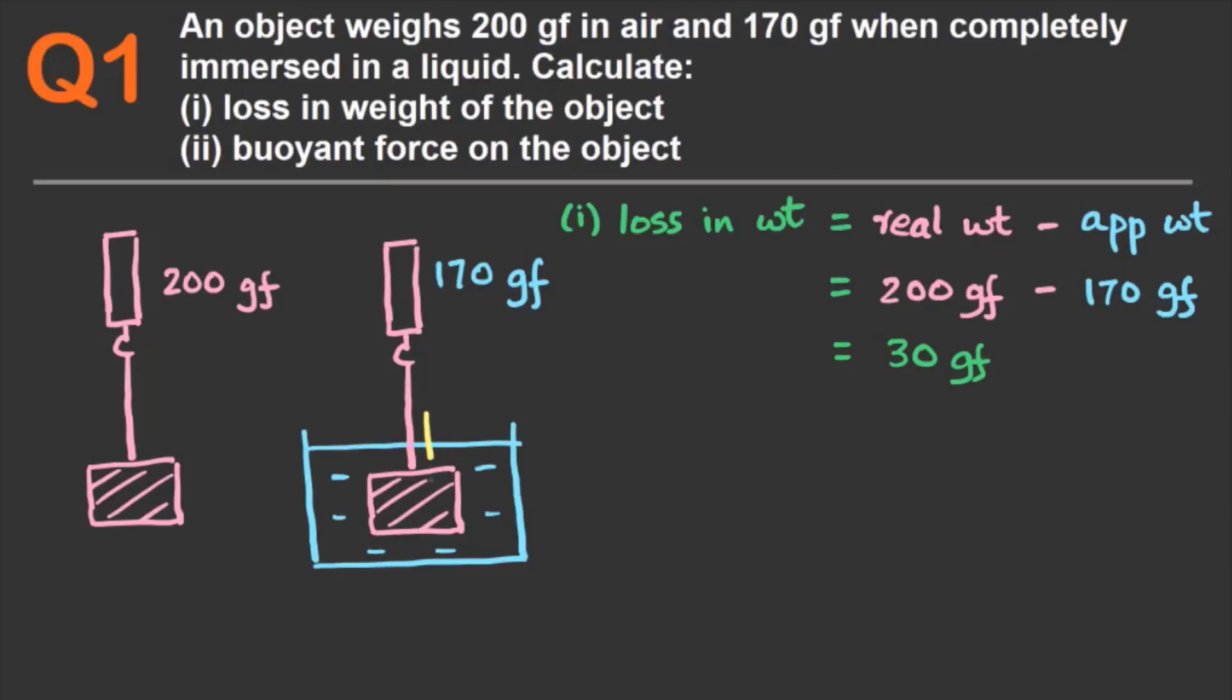The buoyant force or the upward force is the force of the liquid on the object. And I've marked it with F in the diagram. And as we've learned, this buoyant force or upward force is the loss in weight of the object. So it will be the same value, 30 gram force.